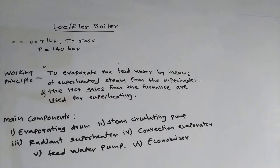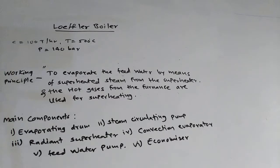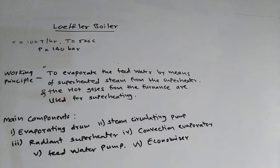The main components of the Löffler boiler are: first, the evaporating drum; then the steam circulating pump; then the radiant superheater; then the convection evaporator; the feed water pump; and finally the economizer. The evaporating drum is where the mixture of heated water and superheated steam is collected. The steam circulating pump circulates the steam. The radiant and convection superheaters are located in the combustion chamber. The feed water pump is used for pumping the feed water, and the economizer is a pre-heating device.